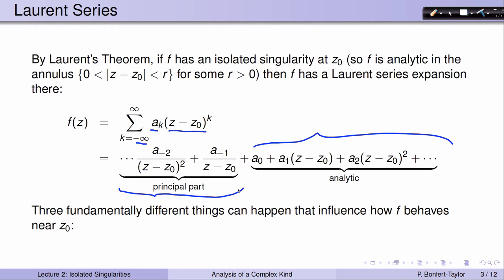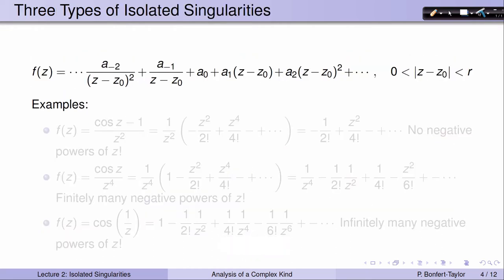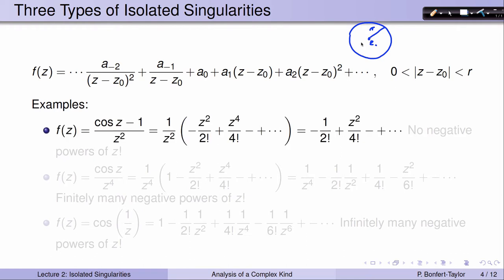Now basically three fundamentally different things can happen that influence how f behaves near z0. We're going to look at examples first that demonstrate these three fundamentally different behaviors. Here again you see the Laurent series expansion of f. Remember that f has an isolated singularity at the point c0, and so we have this disk of radius r such that f is analytic in the punctured disk.